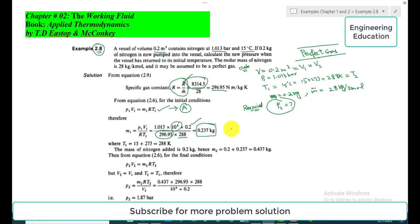To find M₂ after adding 0.2 kilogram of nitrogen into the vessel, initially we have this much mass: 0.237 kg. So M₂ = M₁ + m = 0.237 + 0.2. When we add these two, we get 0.437 kg. So this is the value of M₂.